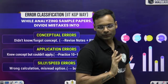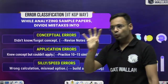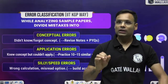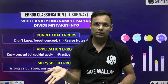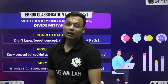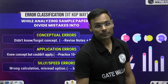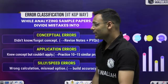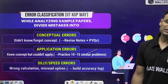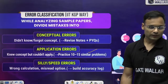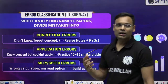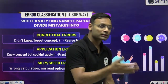The second error type is an application error — you know the concept but can't apply it. Students often say 'sir, we knew this, how did we not solve it?' If you face this during practice, the best remedy is more practice. Keep practicing and you'll develop the right approach. The third type is silly or speeding mistakes — wrong calculations, misreading options, answering to two decimal places when only one decimal or an integer was required.